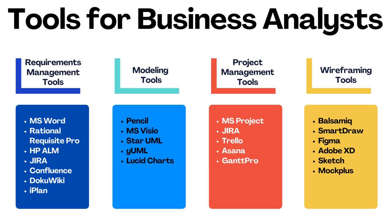Tools help business analysts better collaborate, collect and sort data, document business requirements, perform use case analysis, workflow management, and prototype creation. First, requirements management tools include MS Word, Rational RequisitePro, HPQM, Jira, Confluence, DocuWiki, and iPlan. Requirements management software is designed to simplify all aspects of this task, keeping things organized and making sure nothing is overlooked. Since a BA's job is hardly possible without compiling a variety of documentation, the relevant tooling shows up on a daily basis.